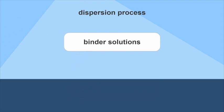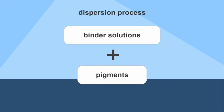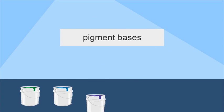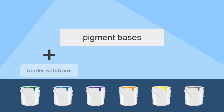In the dispersion process, pigments are mixed with the binder solutions and milled. The more finely the pigment is ground, the stronger the color will be. Based on the pigment bases, customized finished inks can now be manufactured by blending them with further binding solution, additives, and solvents.